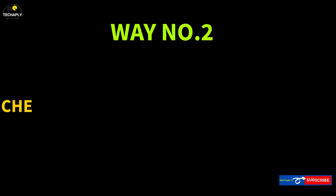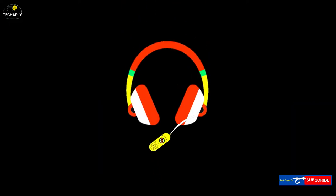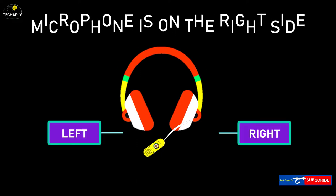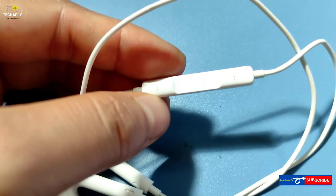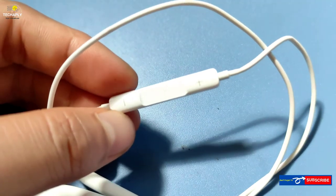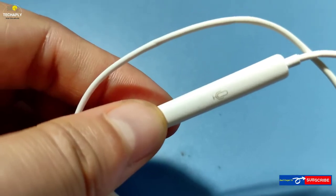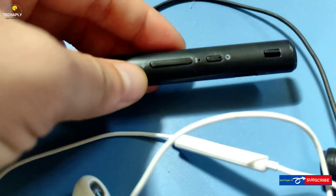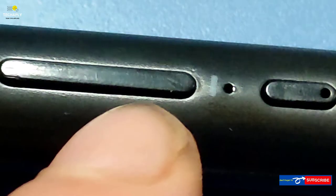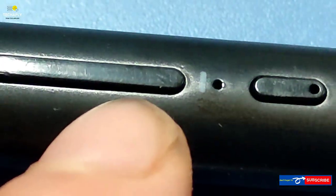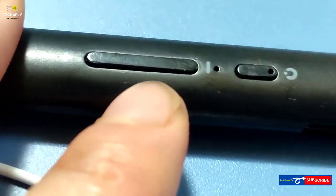Way number two: check your device physically for a microphone. A headset might show its microphone right attached on its right side. For some other devices such as earphones, you need to check on its volume control pad to see if there is any microphone icon or small microphone hole for voice input. Sometimes checking physically is undoable, so let's check out way number three to know more.